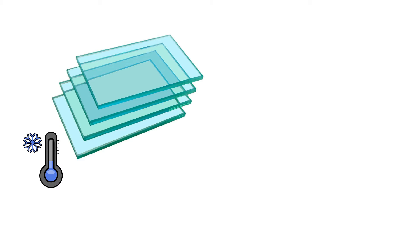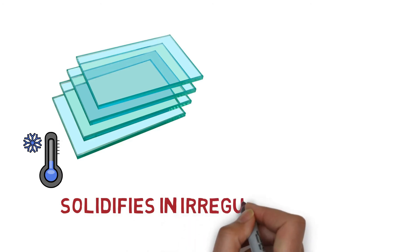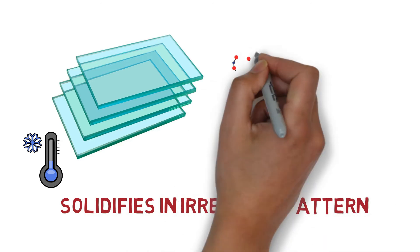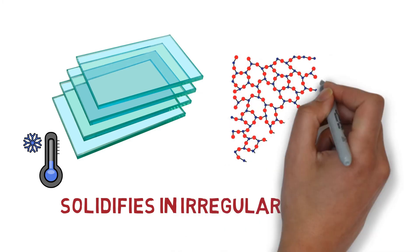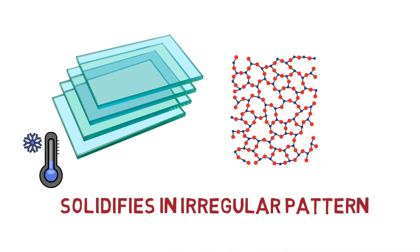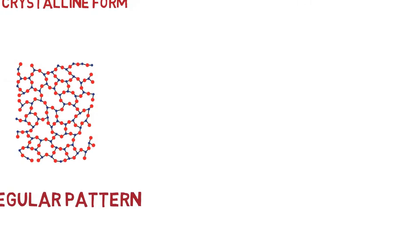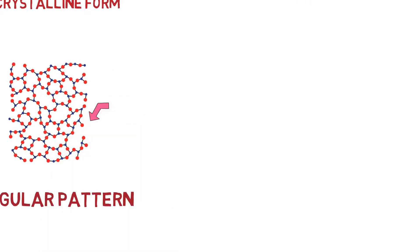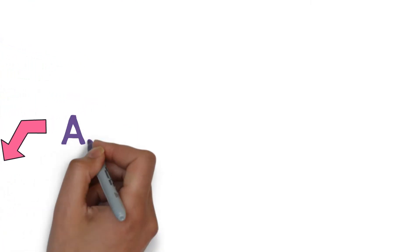The atoms are arranged in an irregular pattern where no crystal structure is formed. The atoms take up whichever space they find and the pattern is irregular in nature and is not repeated. This glass is called an amorphous solid.